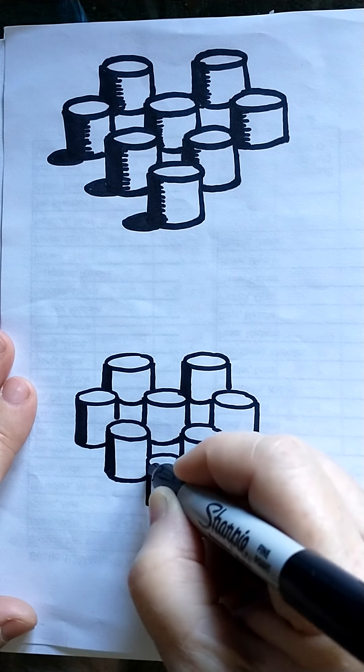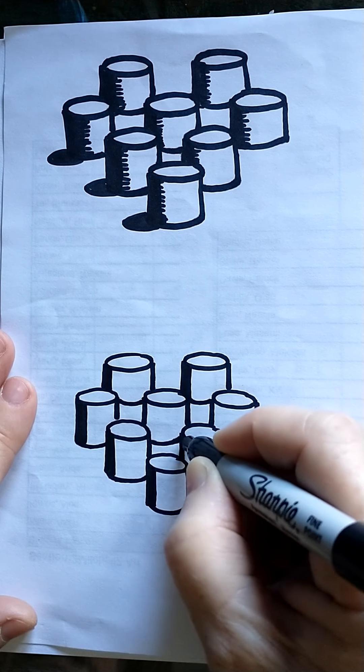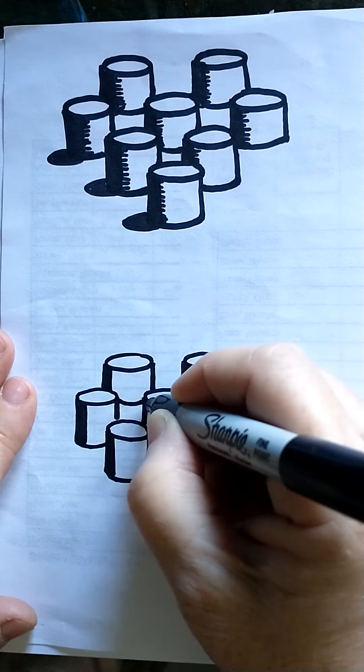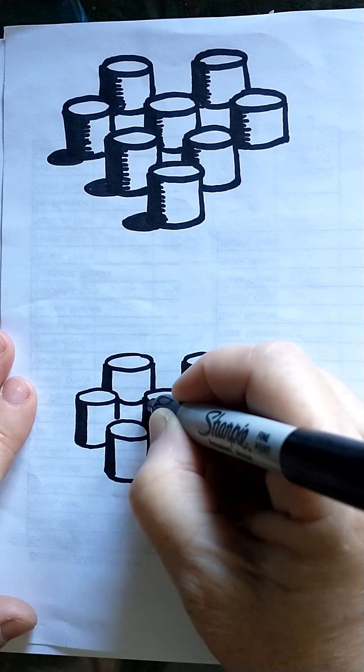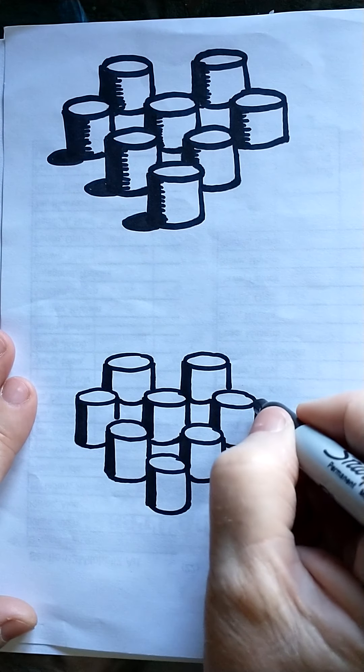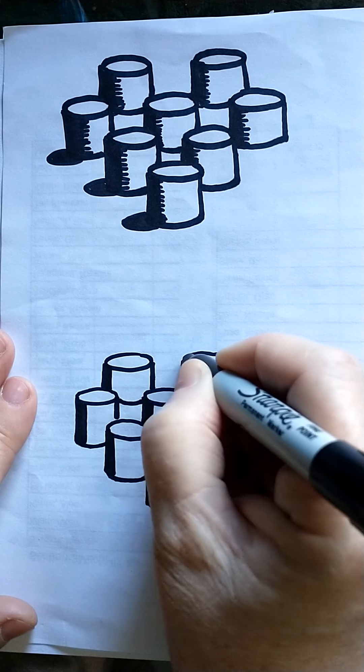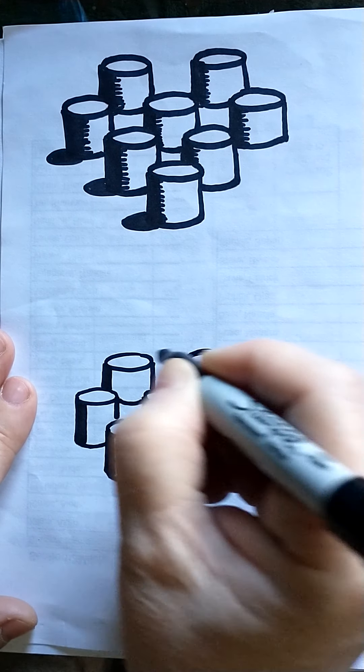And kind of clean up my edges of my cylinders while I do this. So make the right hand side a little darker, maybe clean up my cylinders to the foreshortened circle that's at the top.